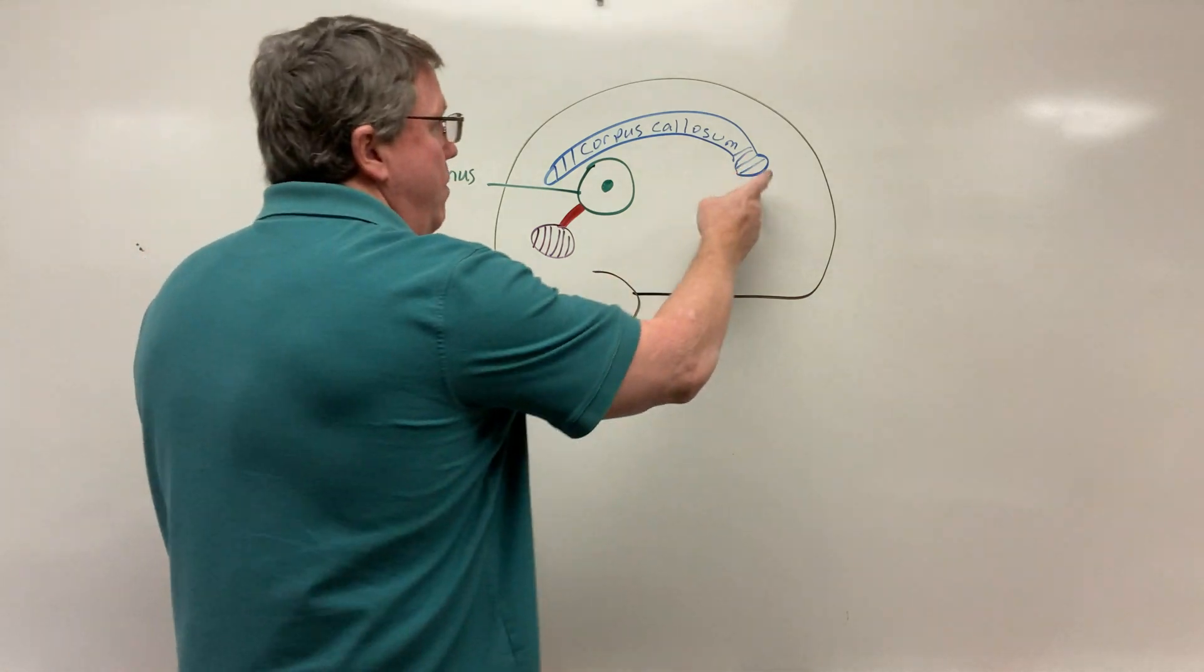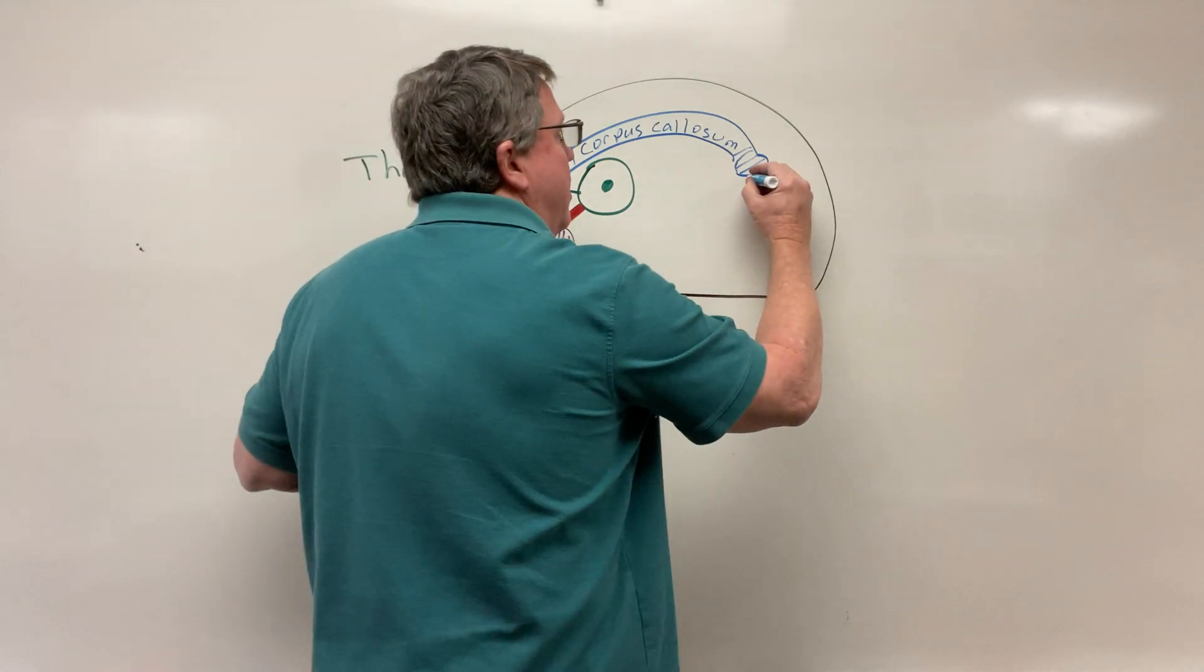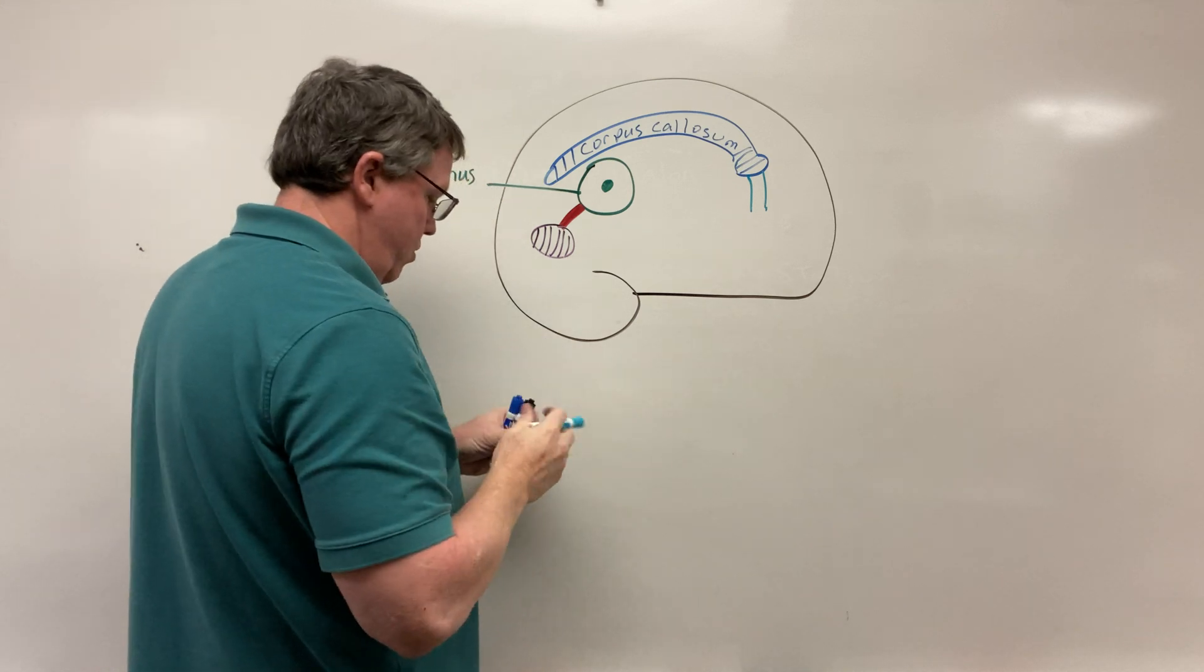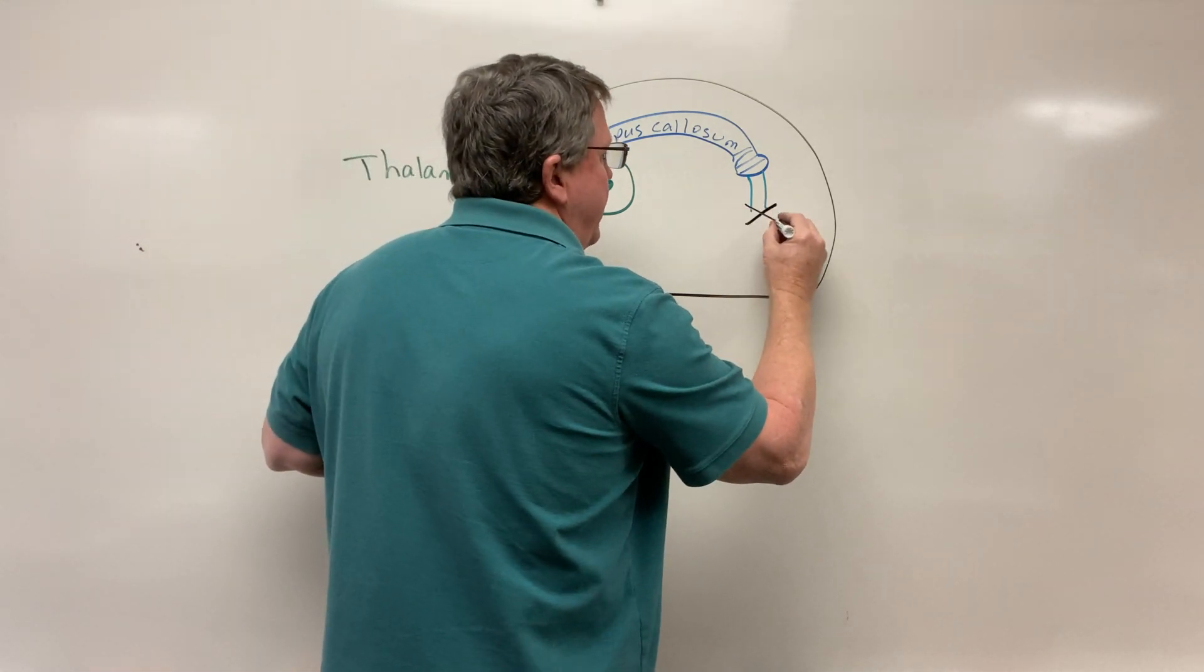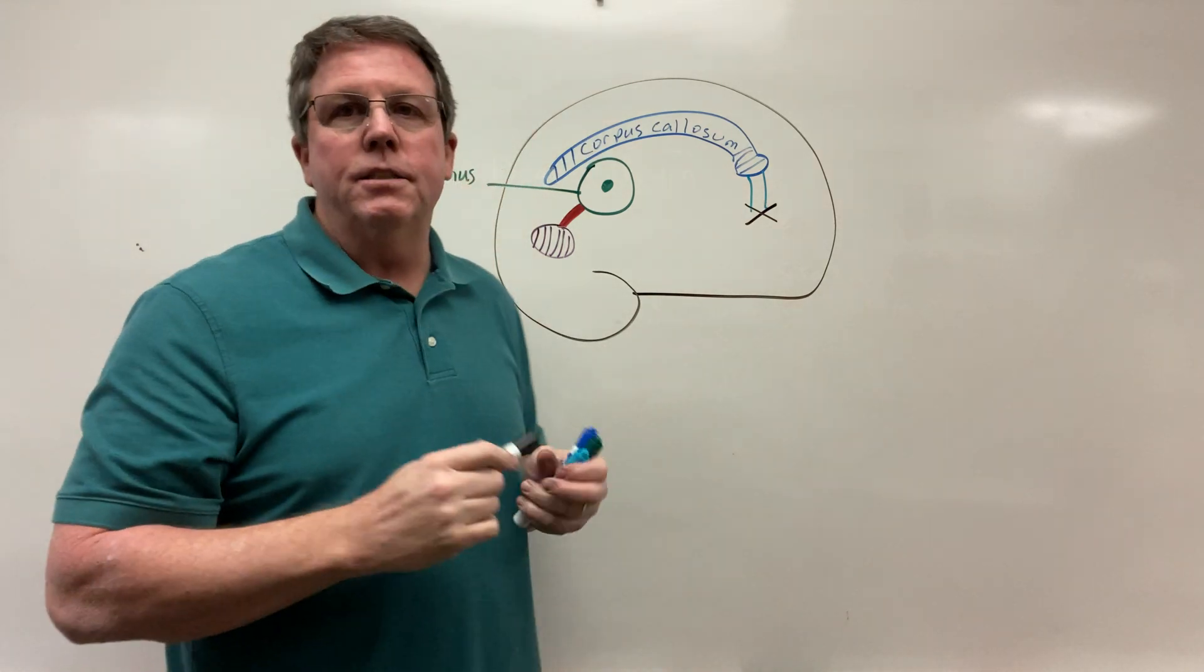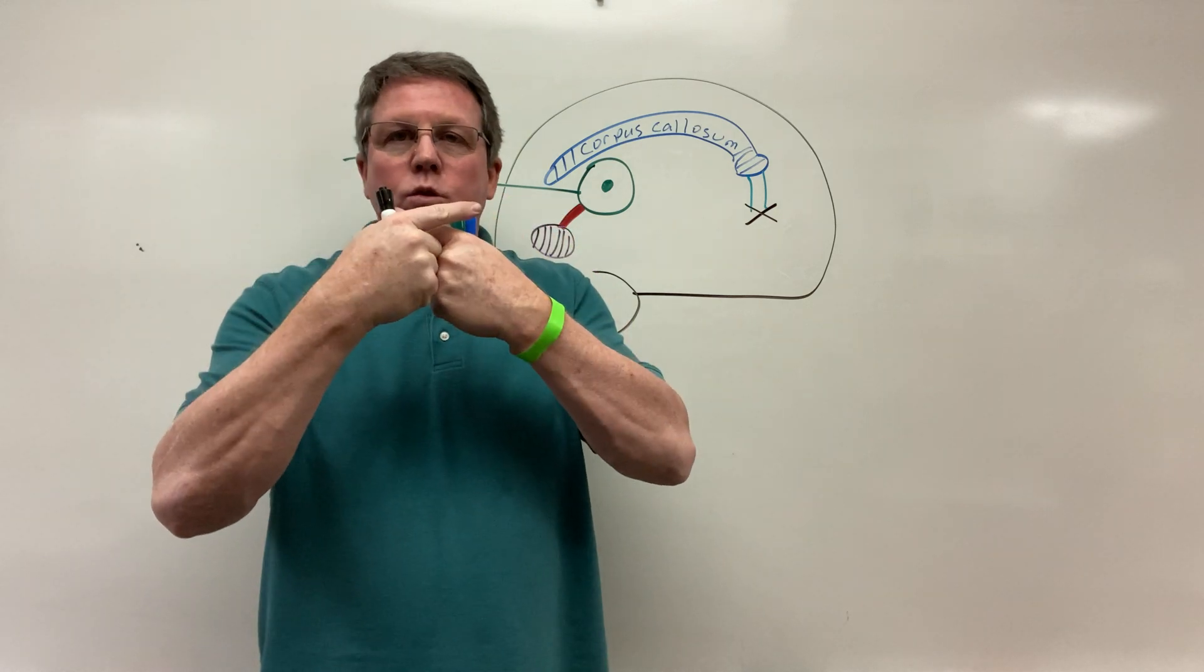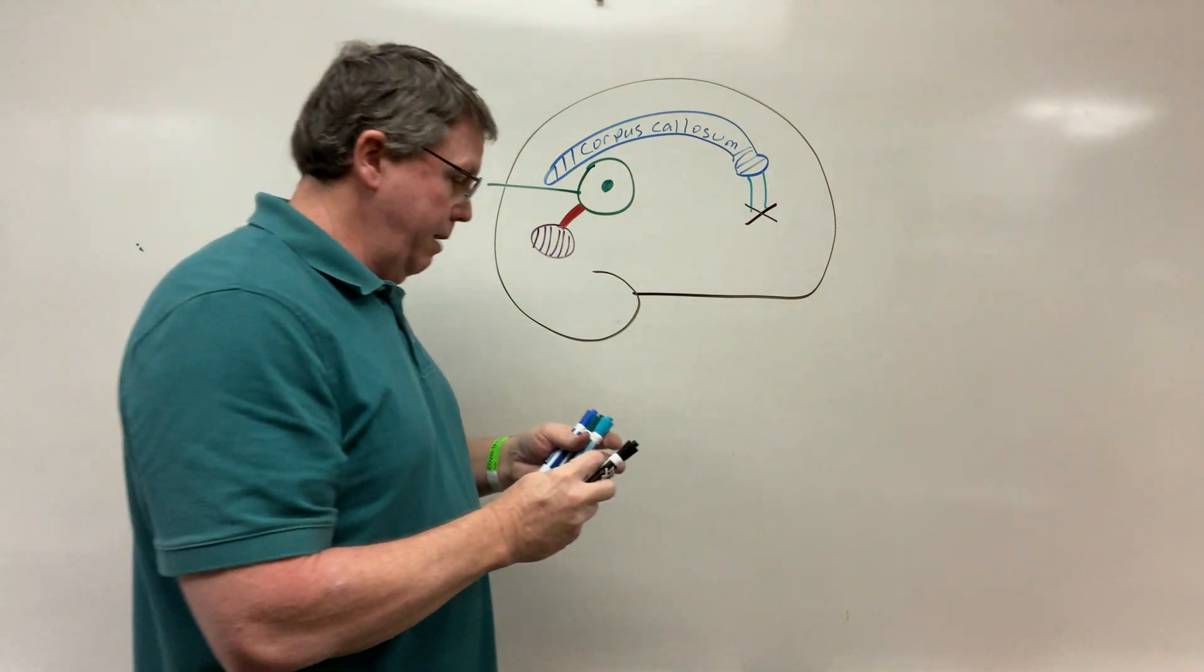And then if we come up over here, we have an extension that comes off of here and comes down to the optic chiasm. The optic chiasm is in the back of your eyes where you have the optic nerves, and 50% of the nerves cross over to the other side, so it makes an X. That's located right about here.